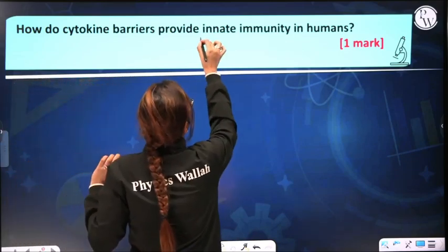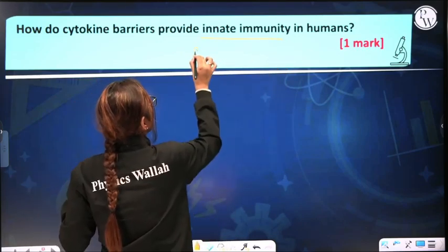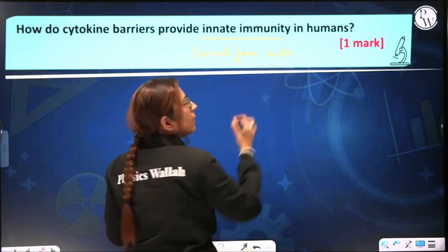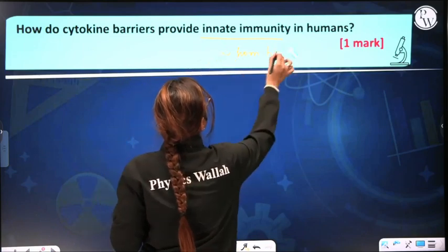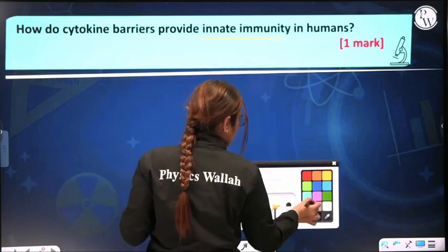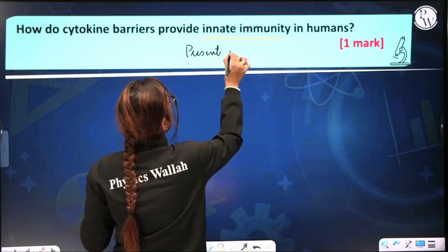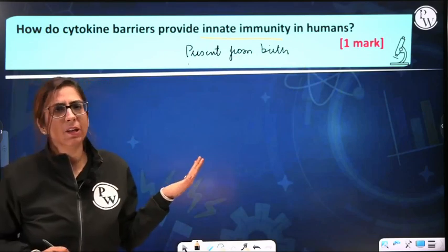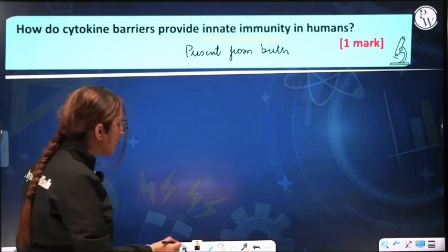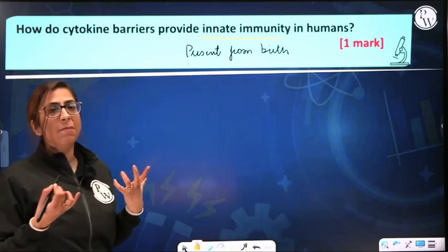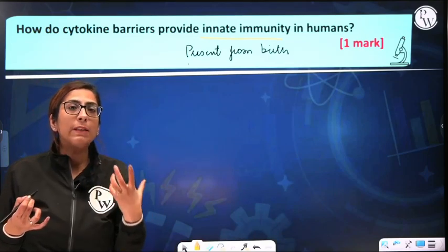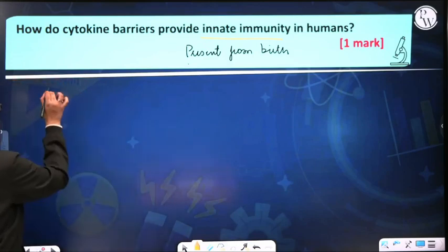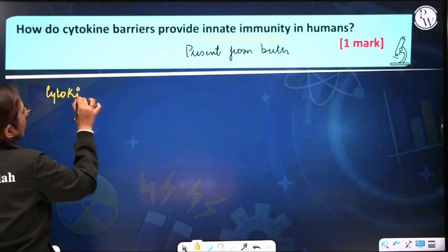What do we mean by innate immunity? Innate immunity is the immunity which is present from birth. This innate immunity has various barriers: the first is a physical barrier, second is a physiological barrier, third is a cellular barrier, and fourth is the cytokine barrier. Our question is related to the cytokine barrier, so we will be talking about that only.